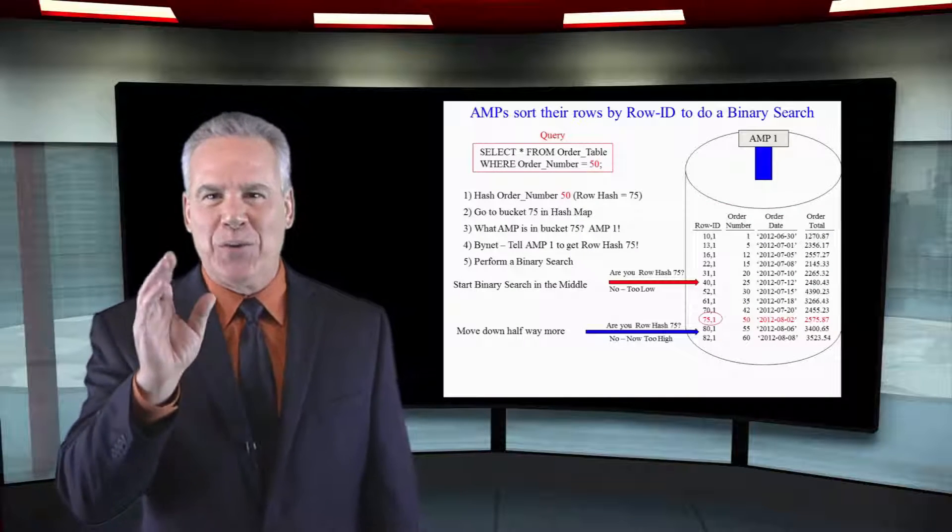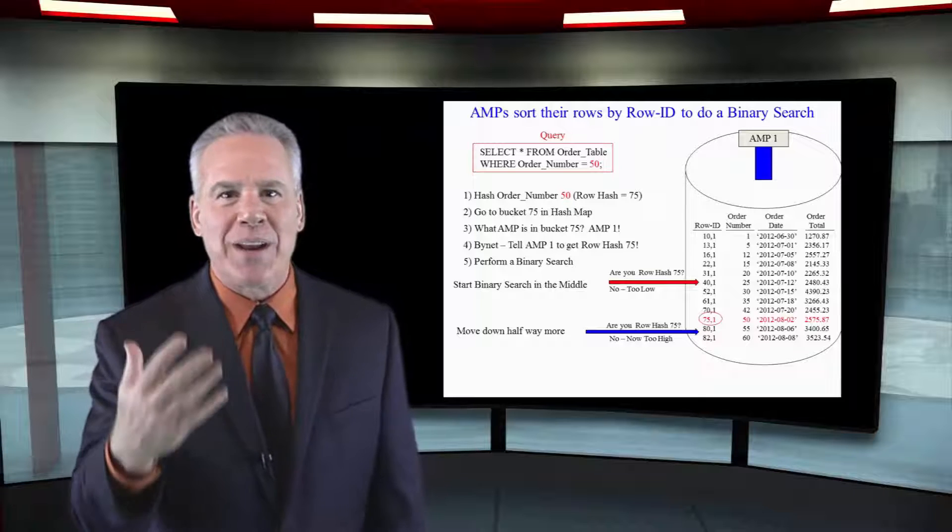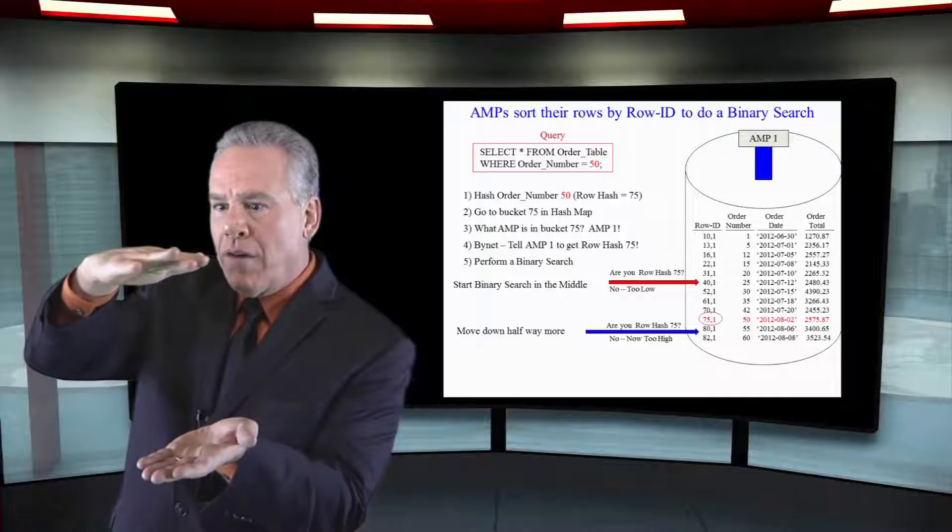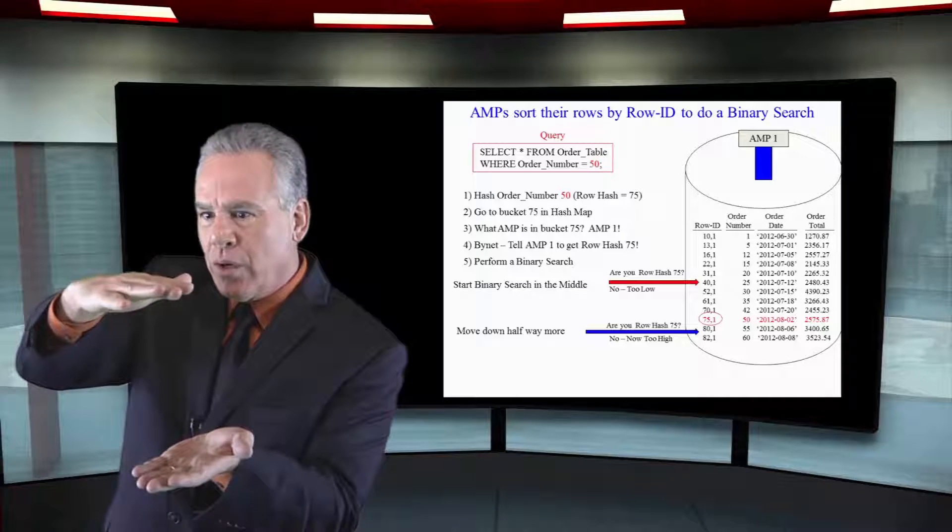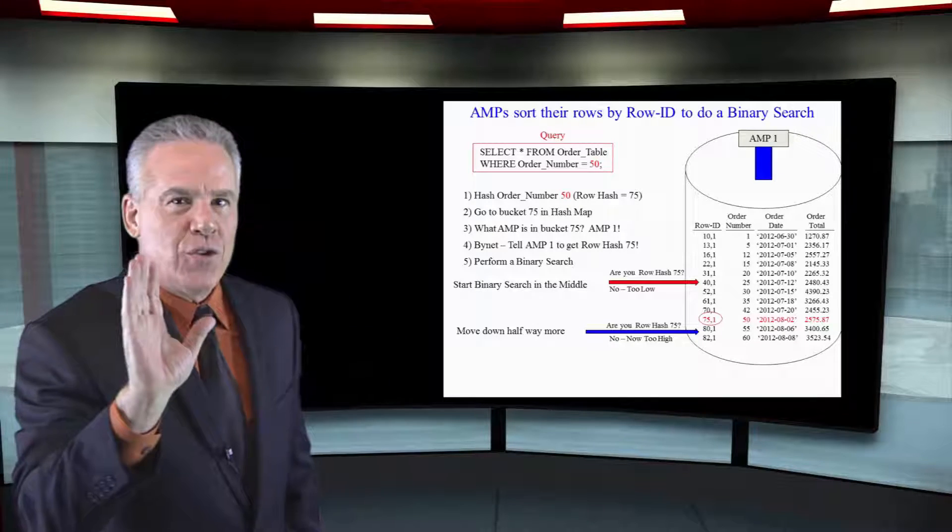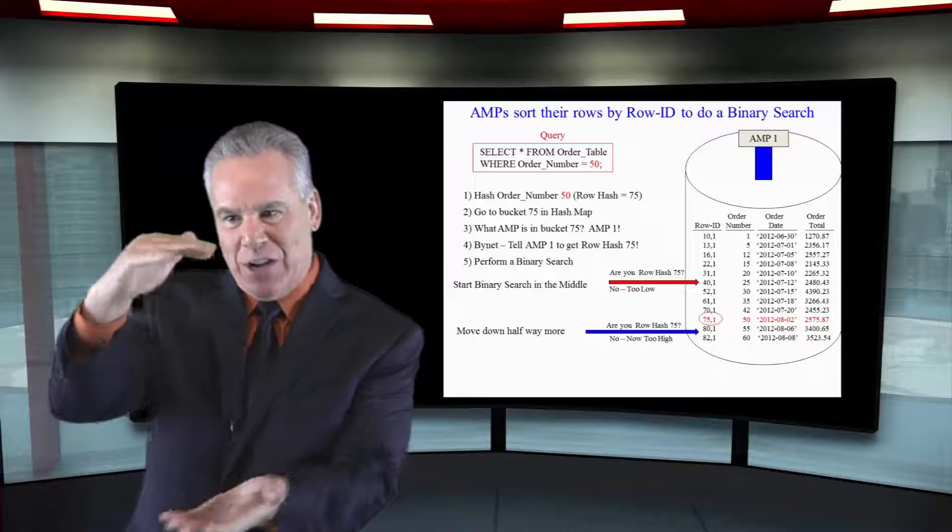How would you like to read through a billion rows? That's what Teradata AMPs sometimes have to do individually. So they've got two ways to read. A full table scan: they read serially, first row, second row, third row. But if you're using any indexing at all, it never does a sequential search.